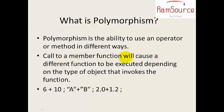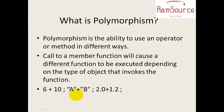A call to a member function will cause a different function to be executed depending on the type of object. For example, using 6 plus 10 or A plus B with the plus operator: here it is an integer operation, here a string operation, here a floating-point operation — a single operator with different types of operations. This is what is meant as polymorphism.